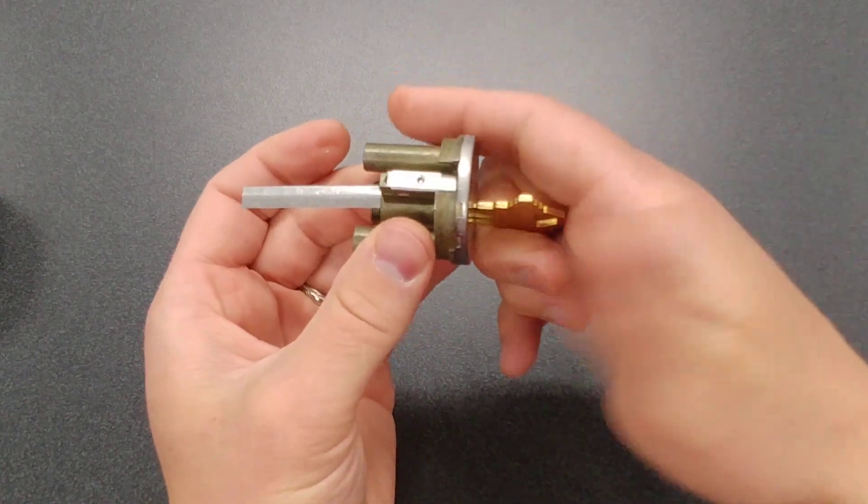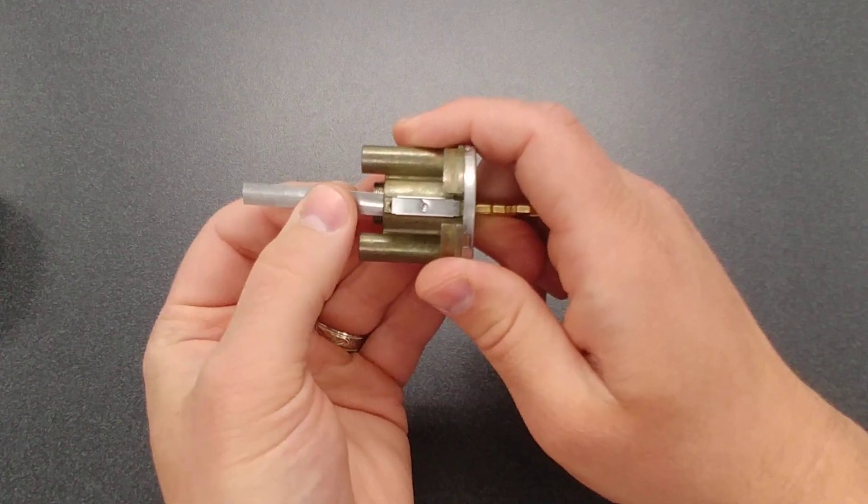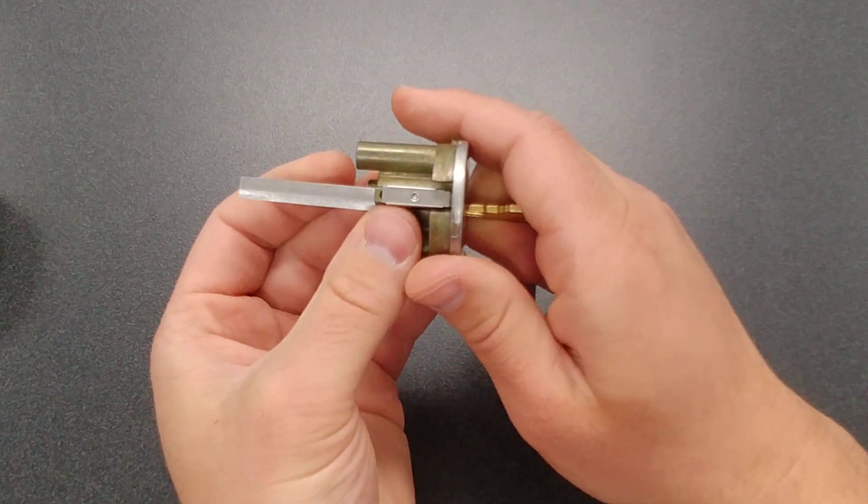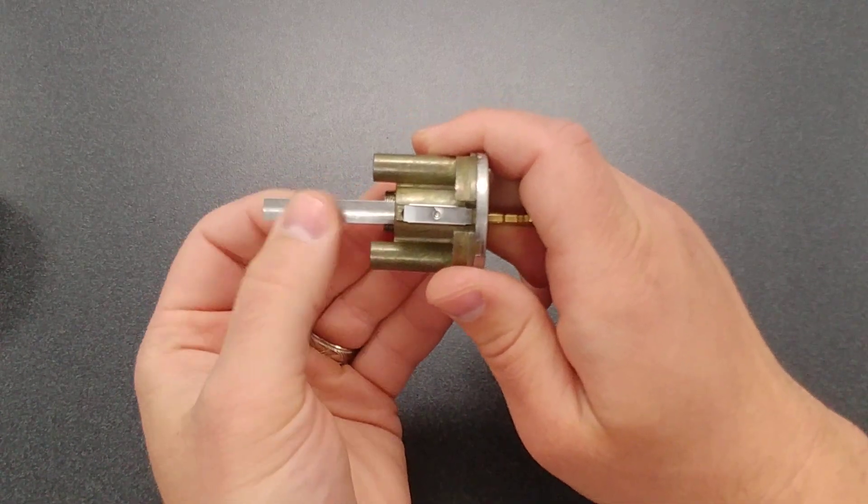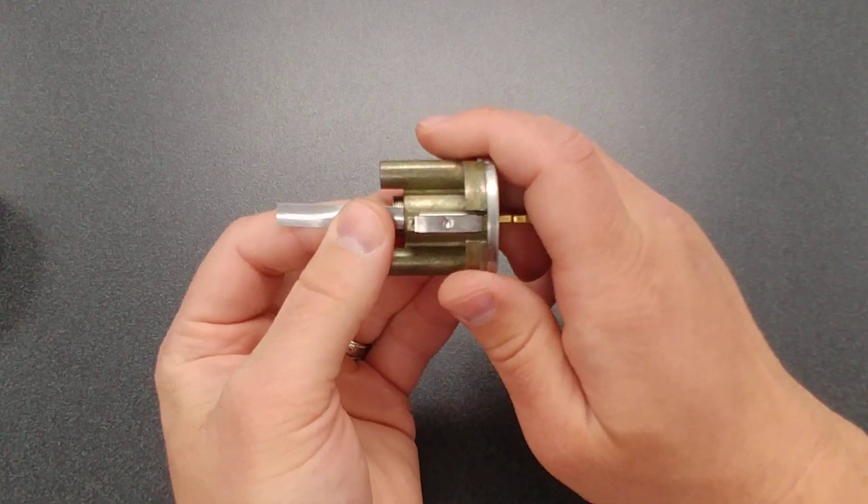I'm going to hold the key like this. I'm going to hold the shim like this. It helps me keep it straight while we're shimming. So what we're going to be doing is I'm going to be moving this key slowly in and out while applying some gentle pressure on the shim. If you apply too much pressure, it's not going to work. So just a little bit of pressure.